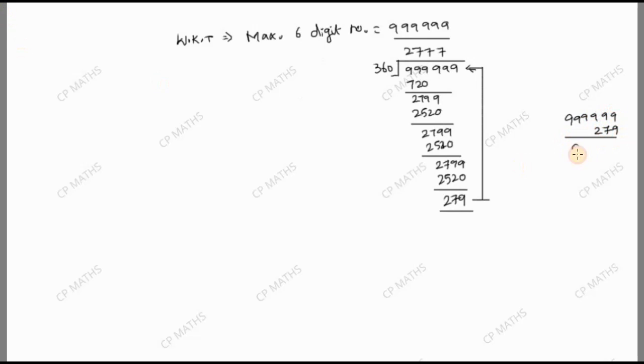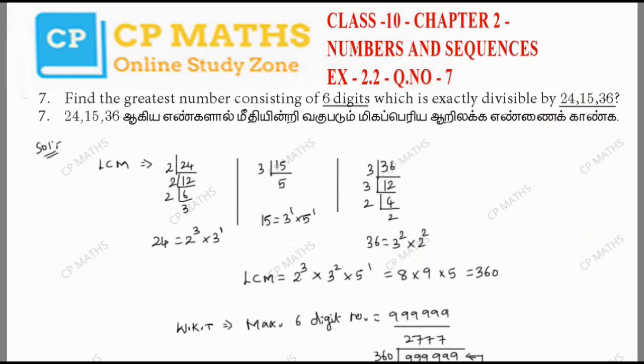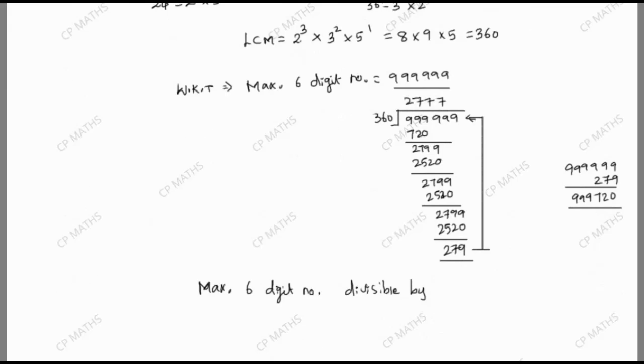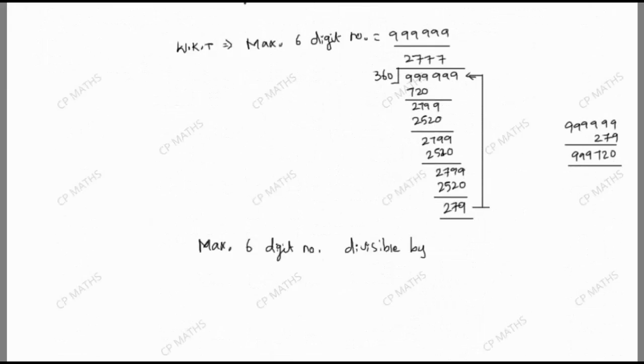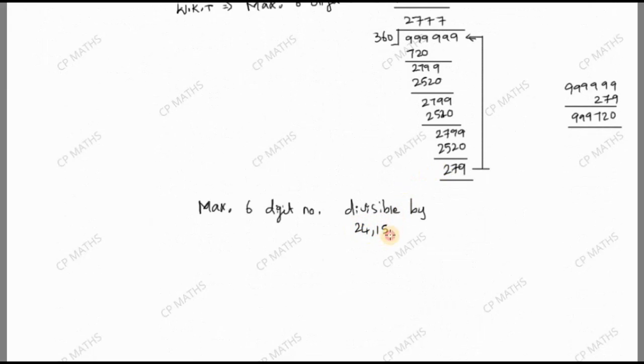So 999999 minus 279 equals 999720. This is the final answer - the maximum 6-digit number divisible by 24, 15, and 36. Thank you.